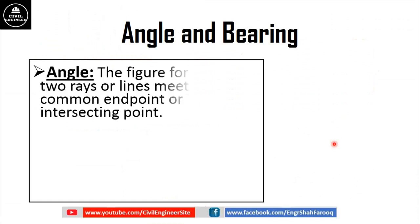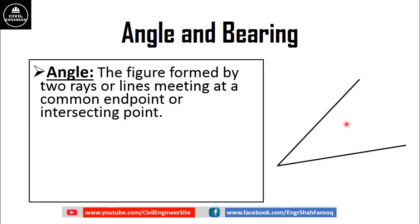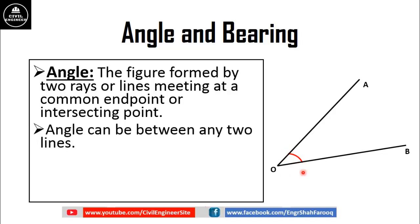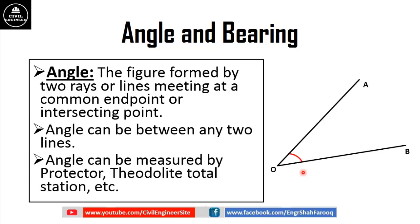First, we will define what is angle. The figure or shape formed by two rays or lines meeting at a common end point or intersecting point is known as angle. When two lines or rays intersect each other at an intersecting point, an angle is formed between the two lines. Angle can be between any two lines. Angle can be measured by protractor, theodolite, total stations, and other surveying equipment.